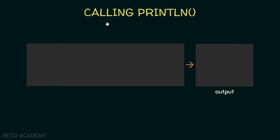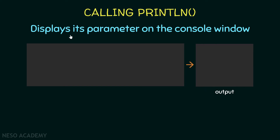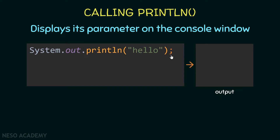Now let's talk about the println method and how we can use it. This method displays its parameter on the console — whatever we put between the parentheses will be printed on the console window, which is a small window where we can see the output of our program. Let's have a look at this Java code — it ends with a semicolon, so this is a statement: System.out.println with a string passed in.